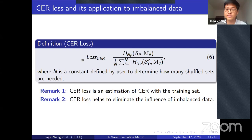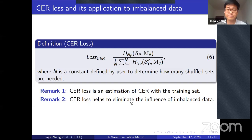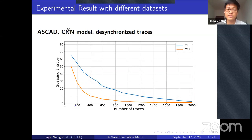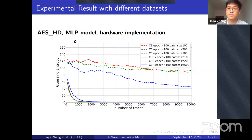The cross entropy ratio metric was also adapted into a new loss function — an estimation of the cross entropy ratio on the training set. Due to its good properties, this loss function helps remove the influence of imbalanced data. Tested on several public datasets with imbalanced data and different deep learning models, different situations, and both software and hardware implementations, the cross entropy ratio loss function greatly improves attack efficiency.